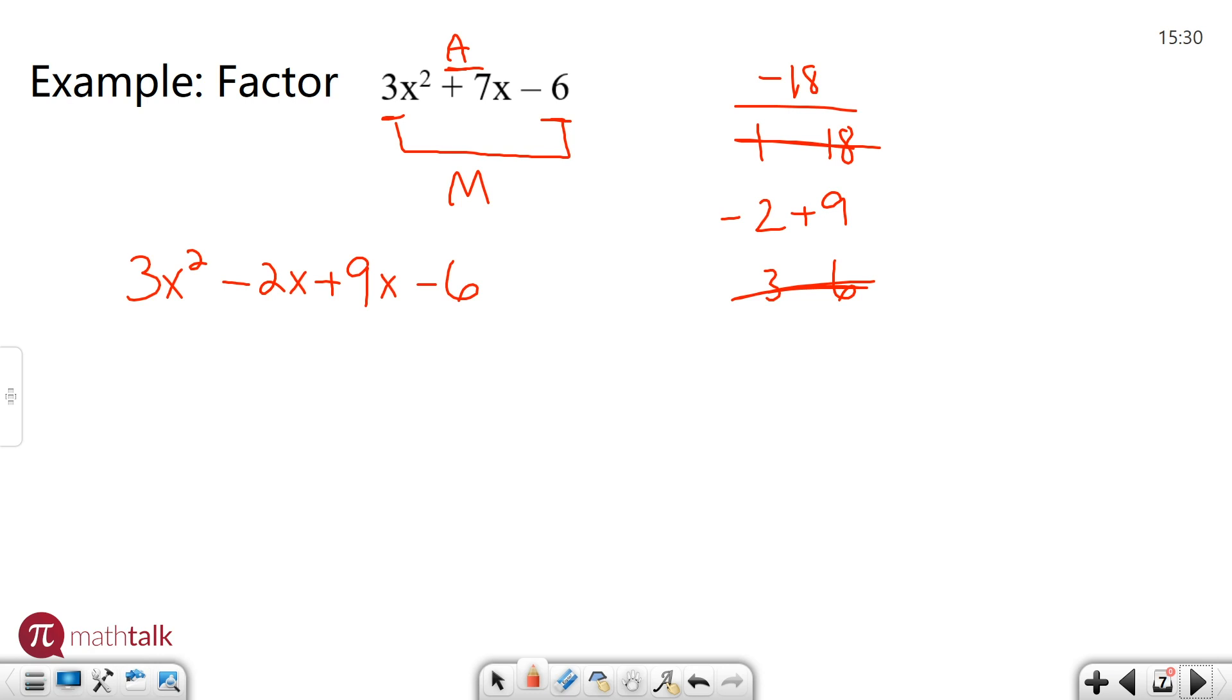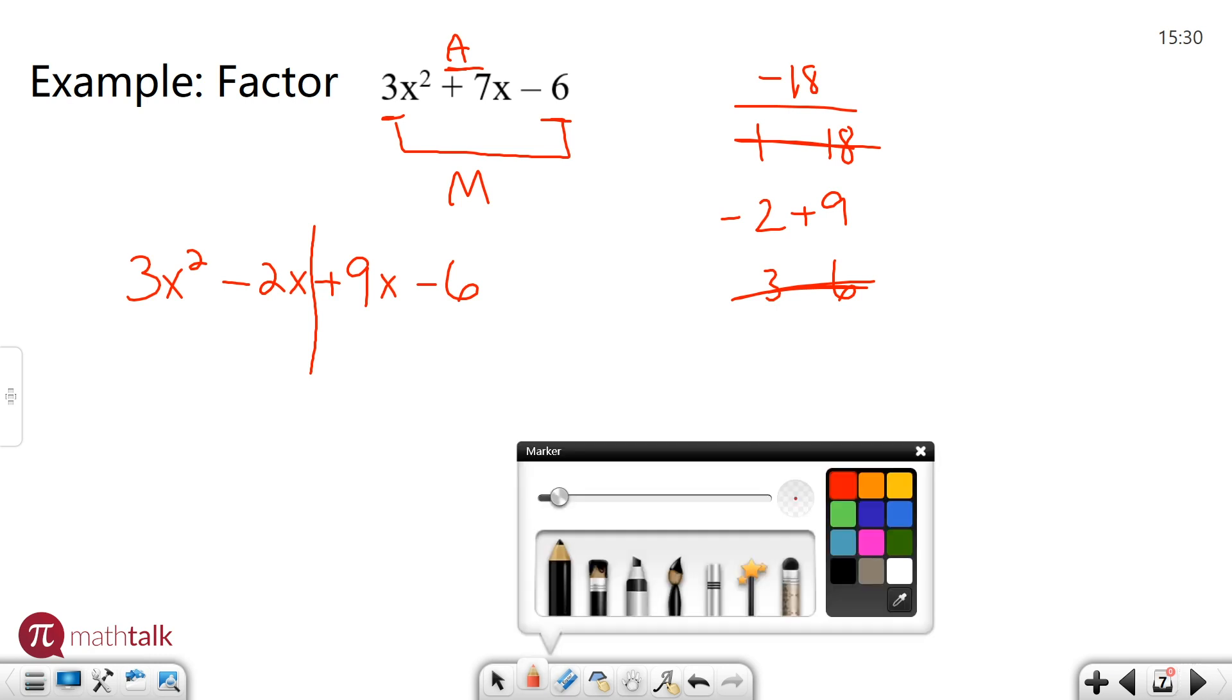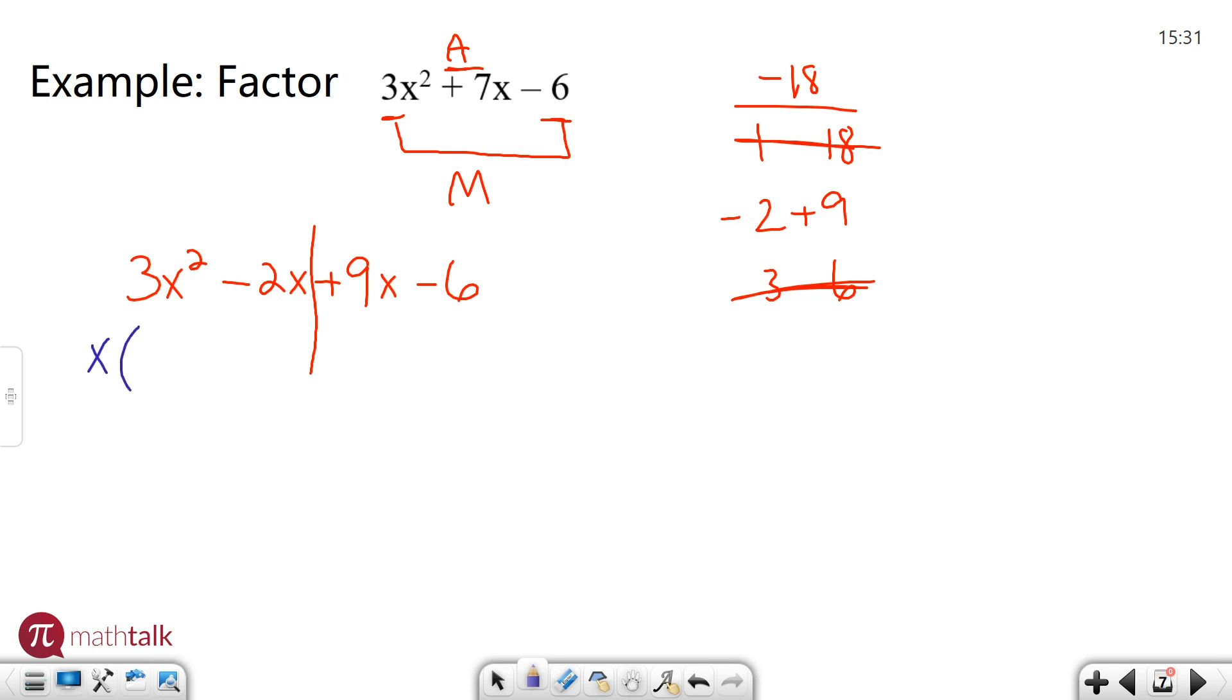I'm going to basically split this up down the middle. And I'm going to factor each of these pairs of expressions or terms. So what I need to do now is I need to find something that goes into both 3x² and negative 2x, something I have in common. And really the only thing they have in common is an x.